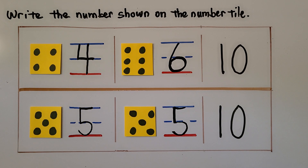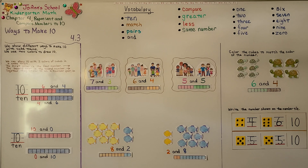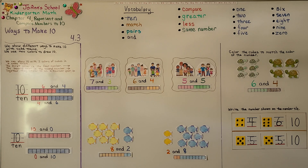We know the number tiles make 10 because we can count the dots on the number tiles. So we can show different ways to make 10 with cube trains — we can use two colors to make 10. Our next lesson, 4.4, we're going to count and order numbers to 10 in counting order moving forward. I hope you'll join me and I hope you have a really good day. Bye bye.